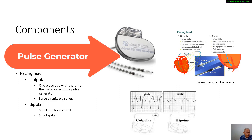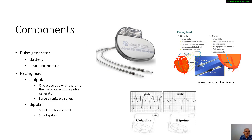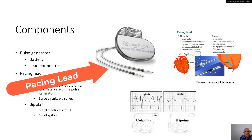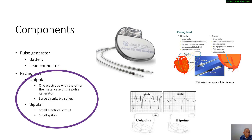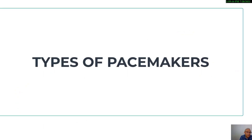Whenever we're talking about a pacemaker, there's always going to be a pulse generator — the source of power where electrical energy can be initiated. It consists of a battery and a lead connector. In addition, there must be pacing leads, which deliver the electrical current to the cardiac muscles. These could either be a unipolar or bipolar pacing lead.